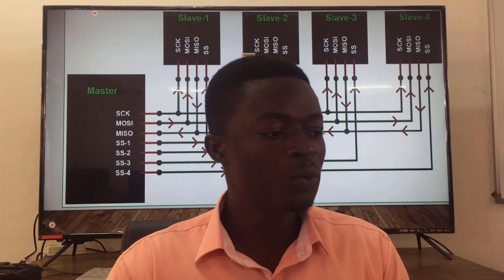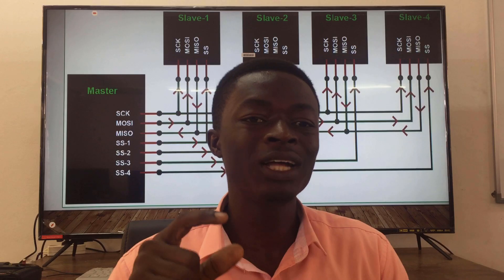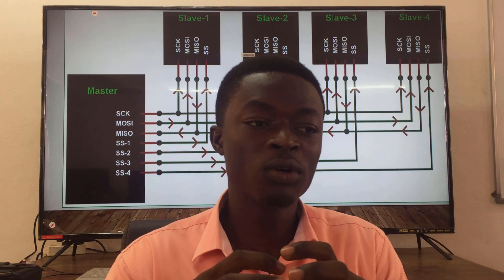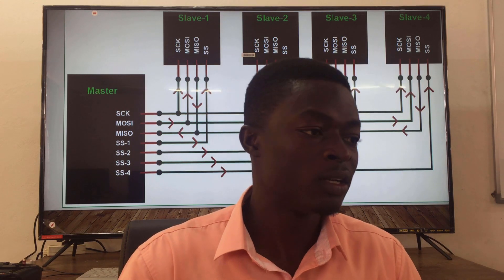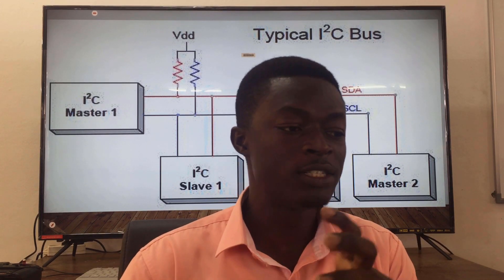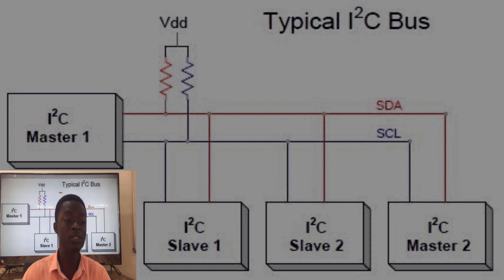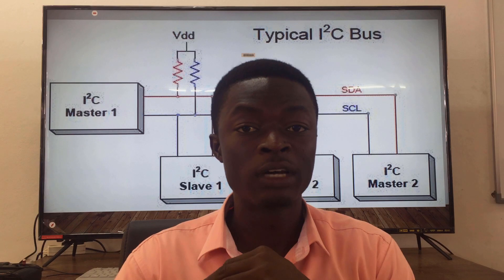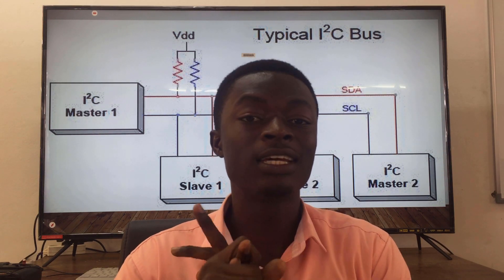Moving on, we look at I2C, which stands for Inter-Integrated Circuit. I2C allows you to connect up to 128 modules to your Arduino. It supports multiple masters and multiple slaves. However, it is slower than SPI. Connection only requires two lines: one for data and one for clock. You can connect many I2C modules — for example, a 16x2 LCD or a 20x4 LCD — all through those two lines.